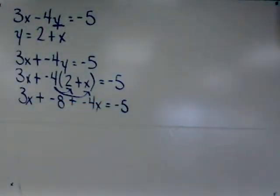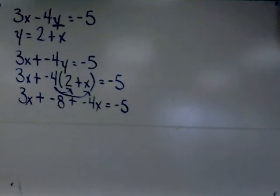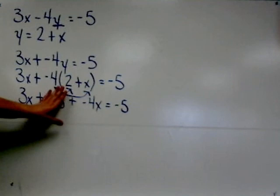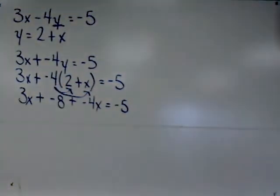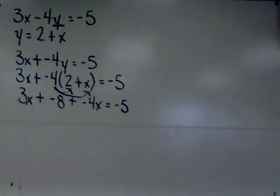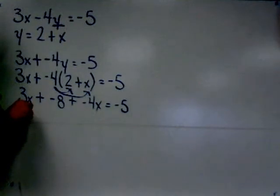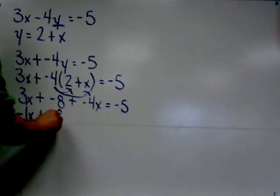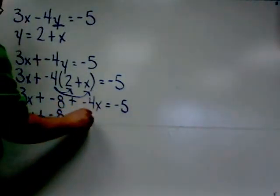Now we'll start simplifying the equation. The first thing I need to do is put the x terms together. 3x and negative 4x, ignoring the negative 8 temporarily. 3x and negative 4x, adding together, make negative 1x. So the simplified expression is negative 1x plus negative 8 equals negative 5.